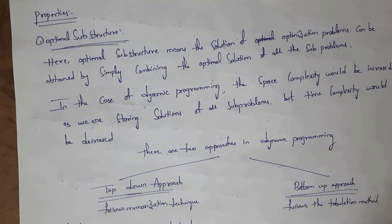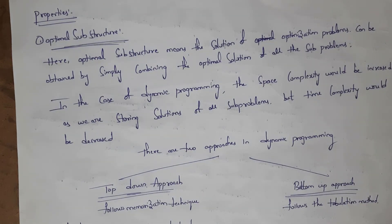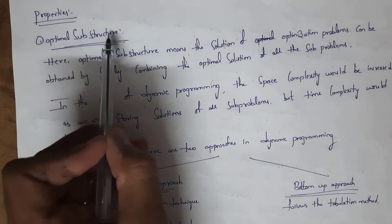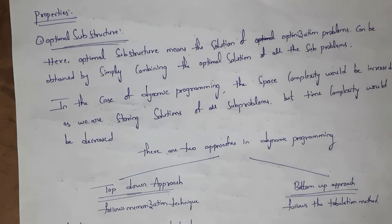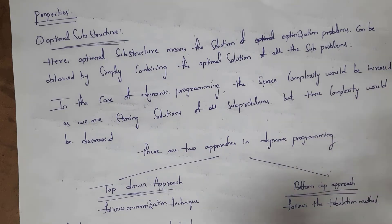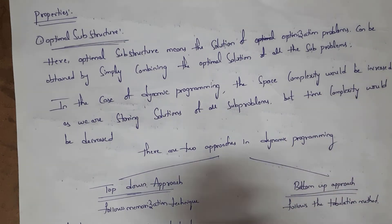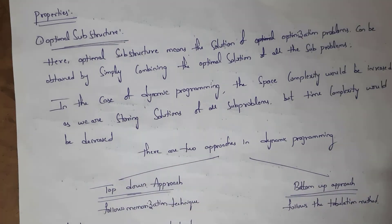Next, the properties of dynamic programming. There is only one property of dynamic programming — that is optimal substructure. After combining the solutions of all sub-problems, we will get the solution to the main problem — the optimal solution to the main problem. We call this optimal substructure.